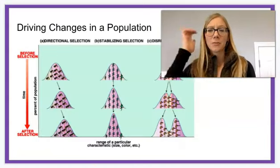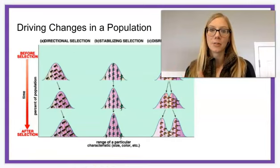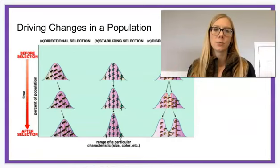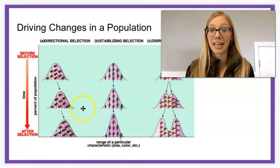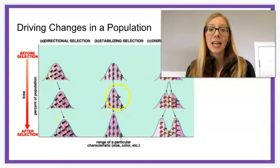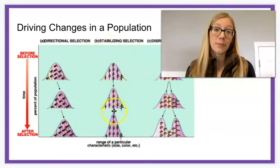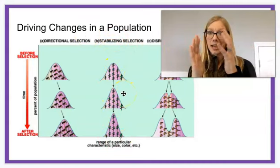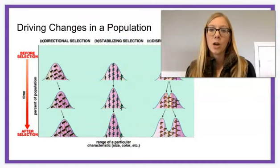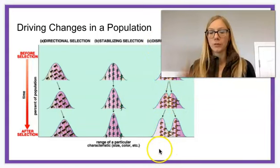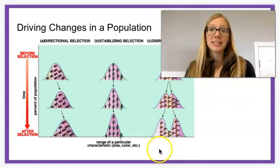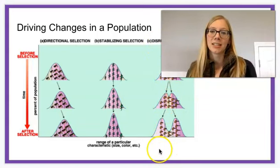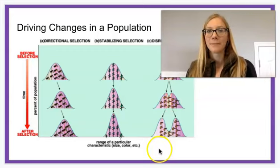What does this result in? Well, this really results in us seeing a population shift one way or another. It can shift towards one end if it gets selected that way. It can get shifted towards the middle — we call that stabilizing selection because it's like the average. Or we can have disruptive selection, which kind of separates it into two based on how those traits get selected in different populations. I hope this was helpful, and have a great day.